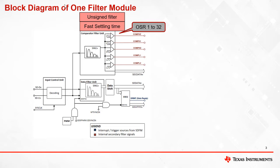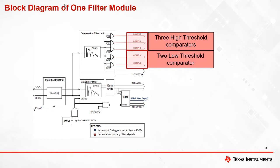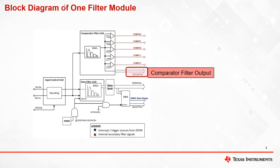The comparator filter provides faster settling time as it supports OSR settings from 1 to 32. It is used to detect short circuit, overcurrent, or undercurrent conditions. The output of the comparator filter unit is an unsigned integer which is compared against three programmable high threshold comparators and two low threshold comparators. The output of the comparator filter is also memory-mapped for debug and data logging purposes.